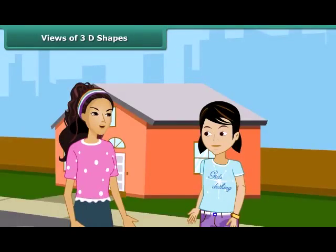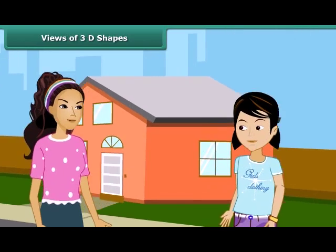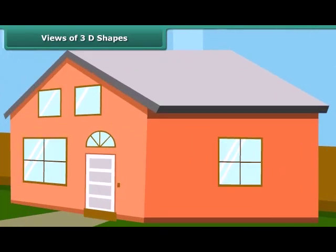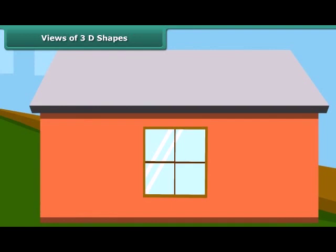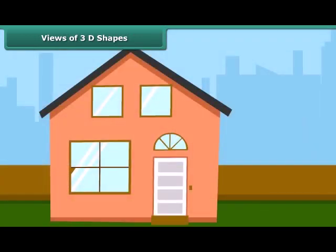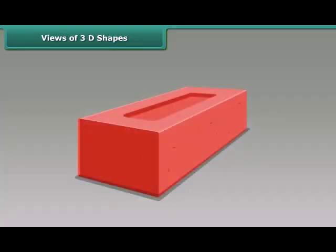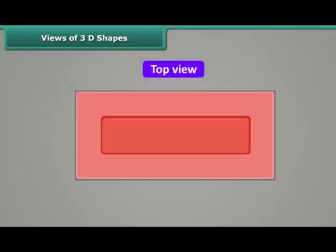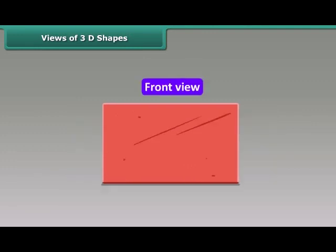Rita, do you know that three-dimensional objects look different from different positions? How? Look at our house. It can have many views. This is the side view of the house, this is the front view, and this is the top view. Similarly, this brick can have different views: top view, side view, and front view.